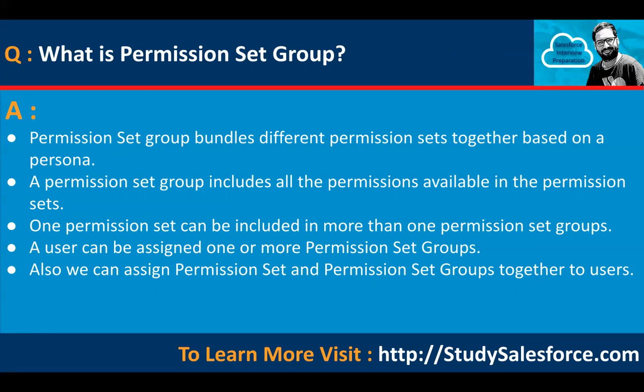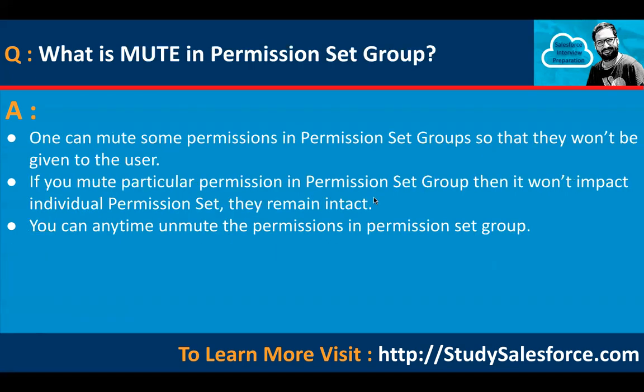One special feature available in permission set groups is the ability to mute permissions. You can mute some permissions in a permission set group so that they won't be given to the user. Muting a particular permission in a permission set group does not impact the individual permission set — they remain intact. You can unmute the permissions in a permission set group at any time.